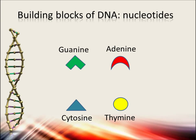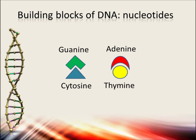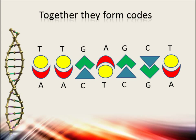First let's explain some more about DNA. There are lots of things that can be explained about it, but let's focus on the part needed to understand this subject. The building blocks of DNA are called nucleotides, and there are four types of them: guanine, adenine, cytosine, and thymine. Guanine and cytosine fit nicely together, and adenine and thymine fit nicely together.